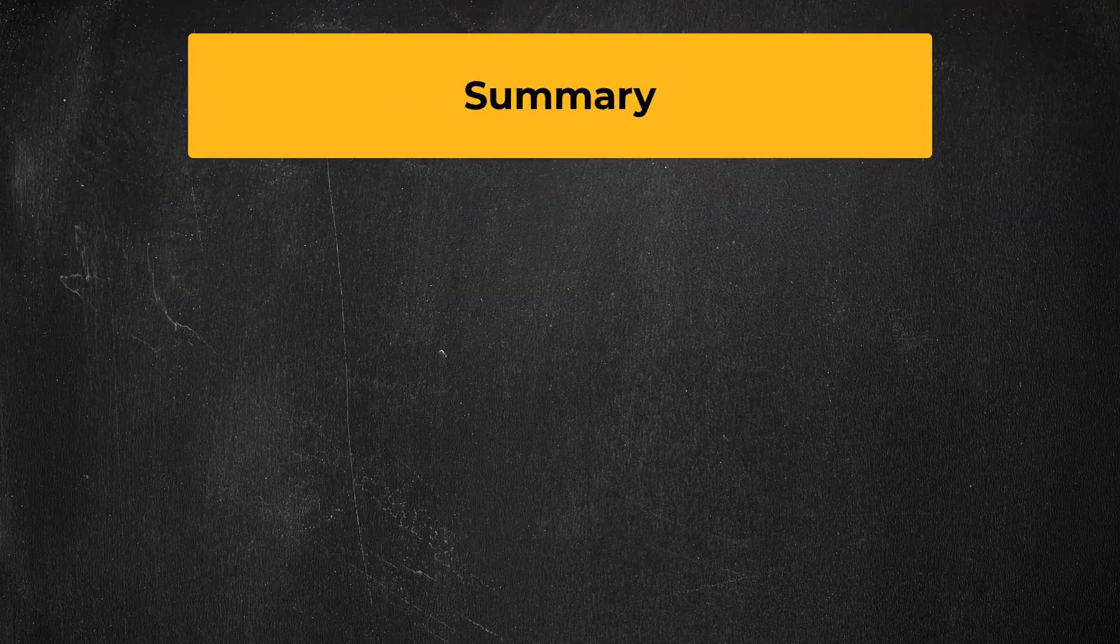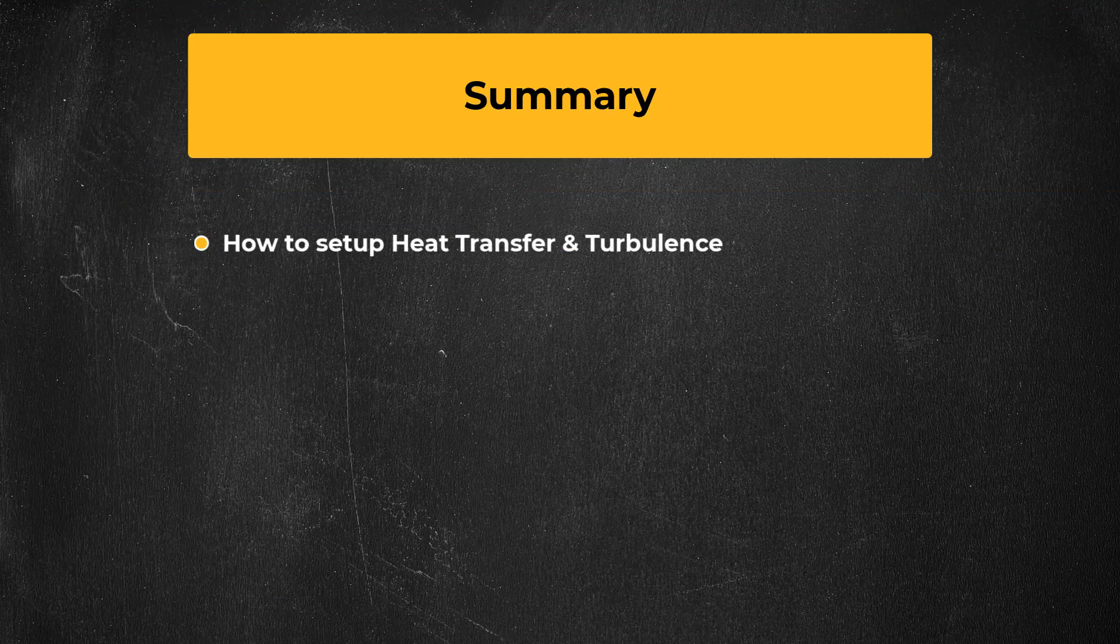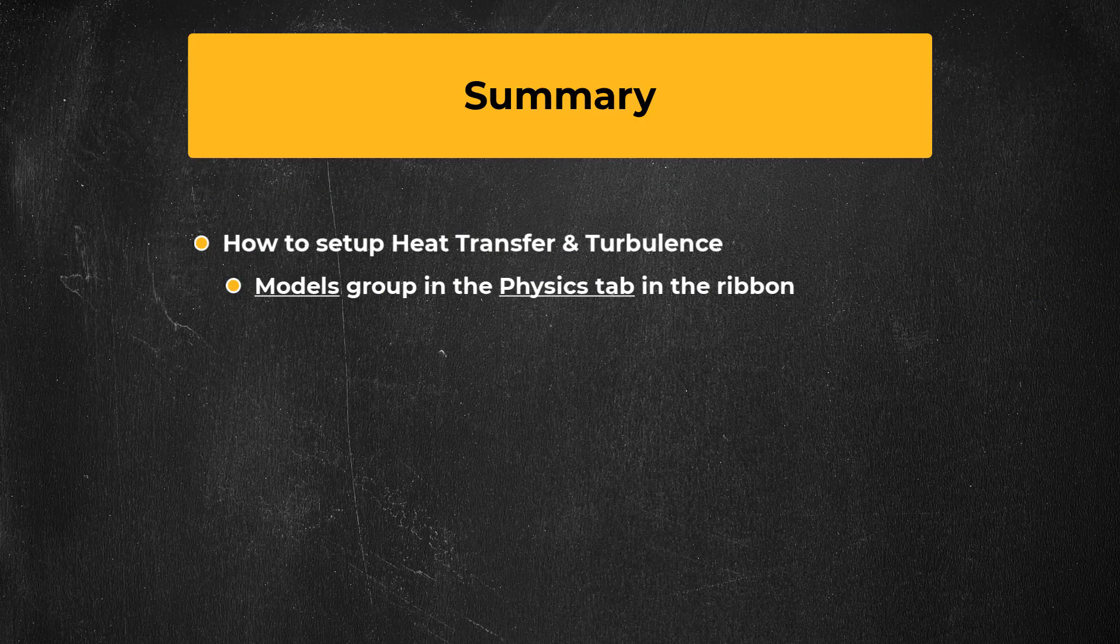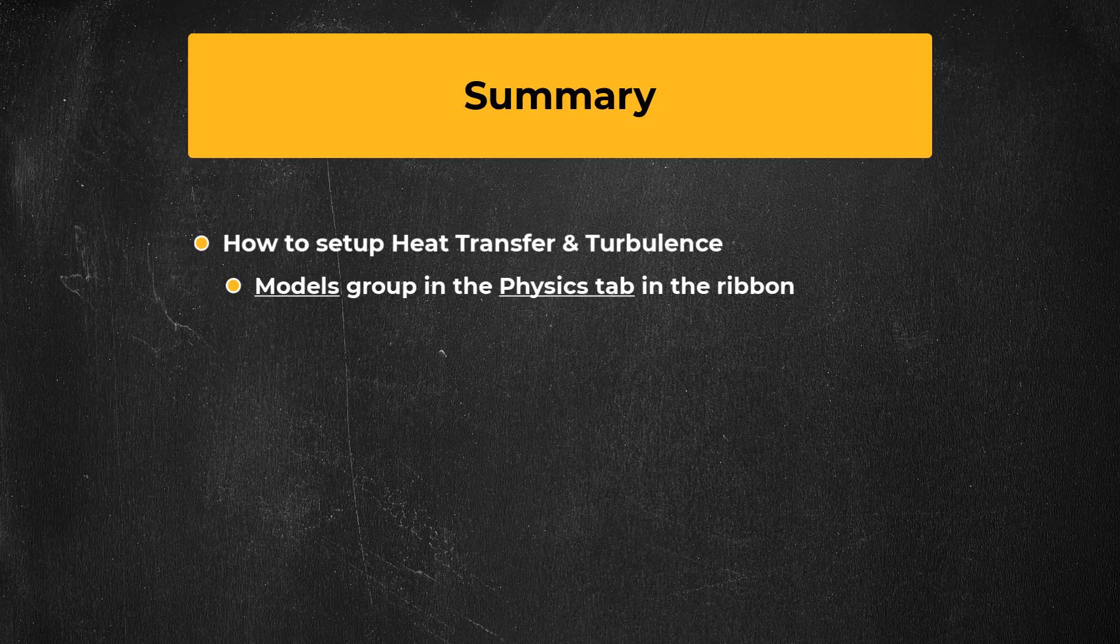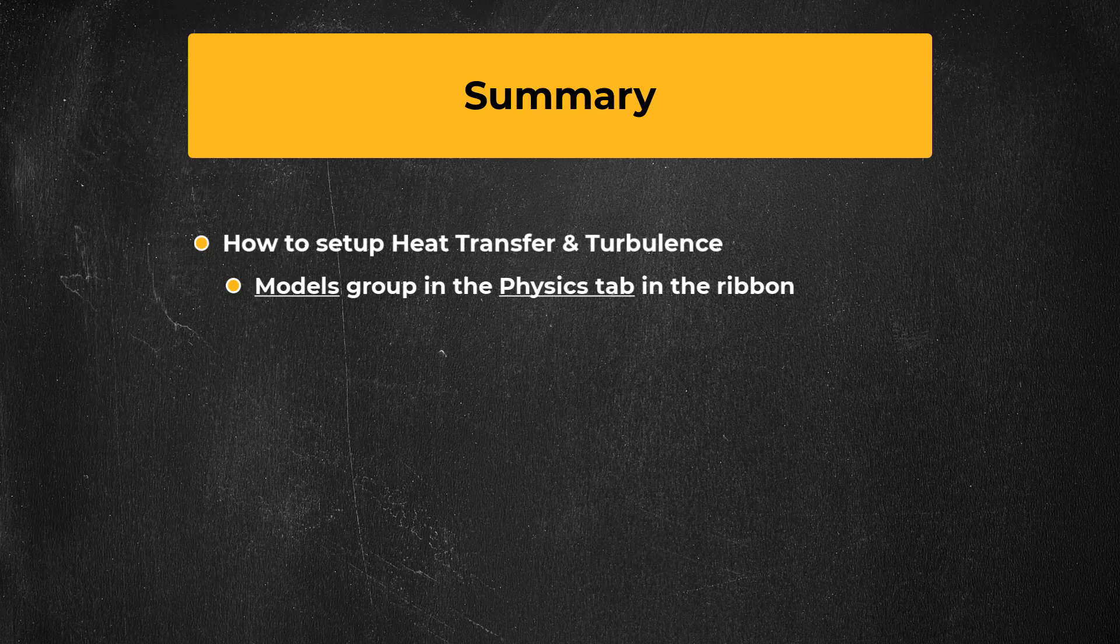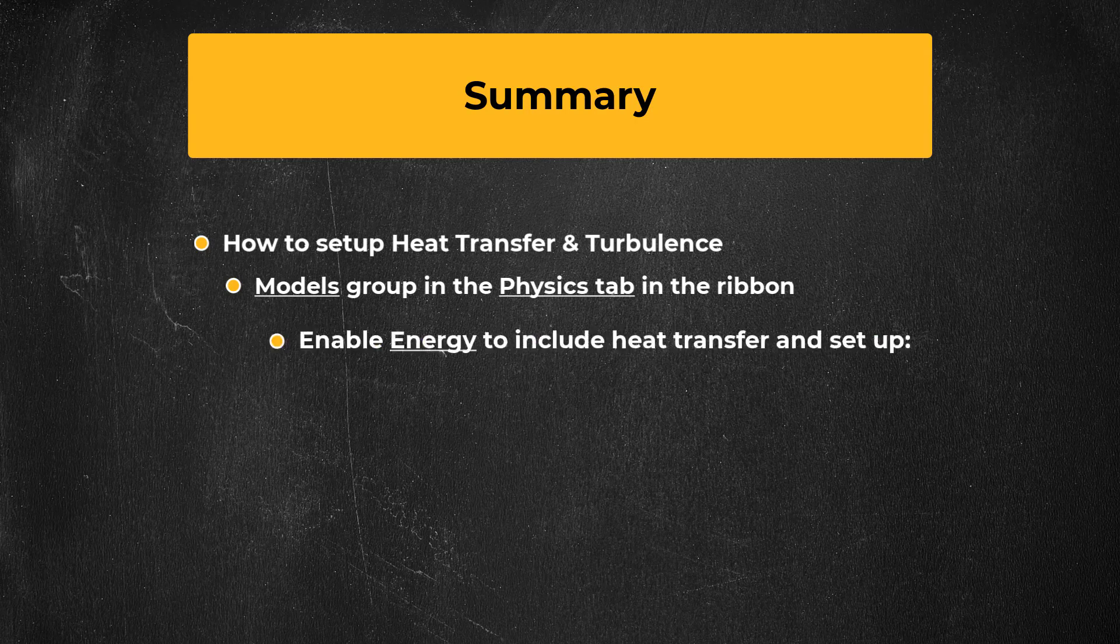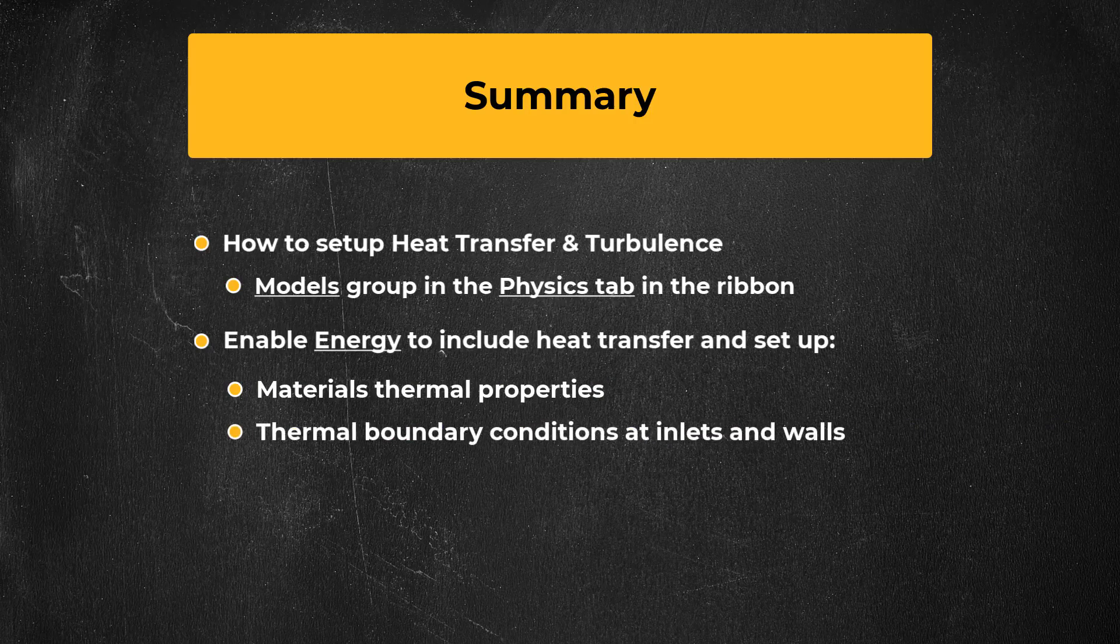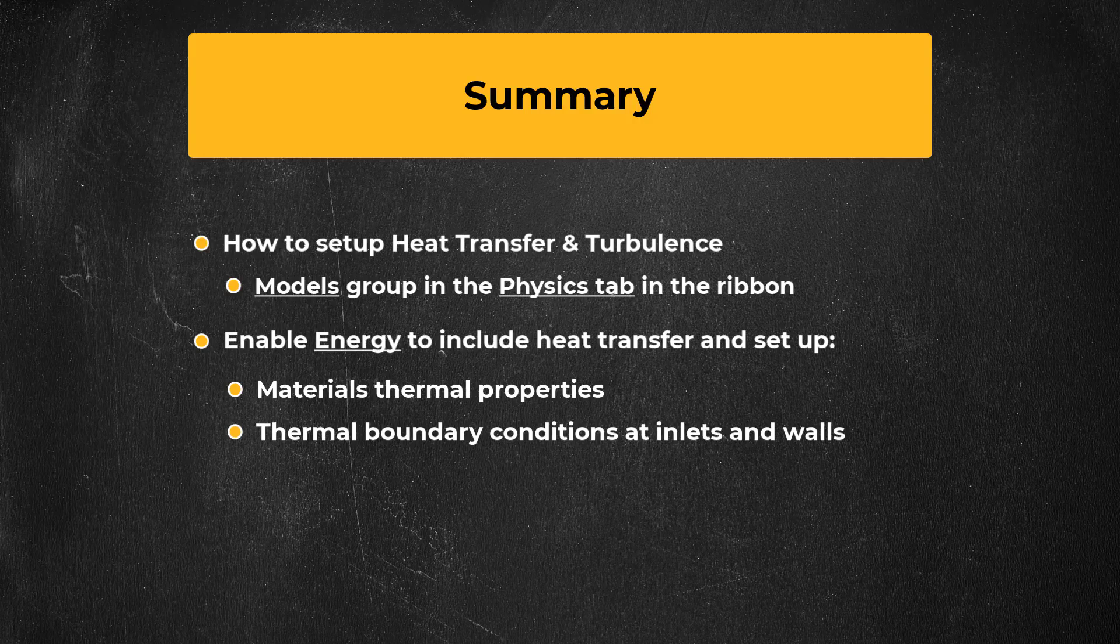To summarize, in this video you have learned how to set up heat transfer and turbulence using the models group in the physics tab of the ANSYS Fluent ribbon. The most important takeaways are: enable energy to include heat transfer in your simulation and then set up material thermal properties and thermal boundary conditions for inlets and walls.